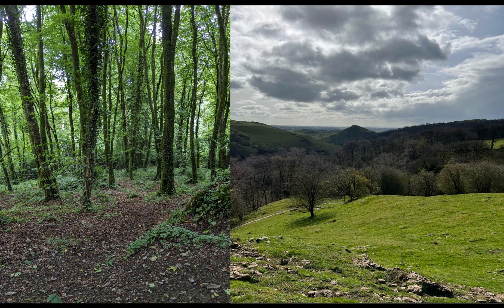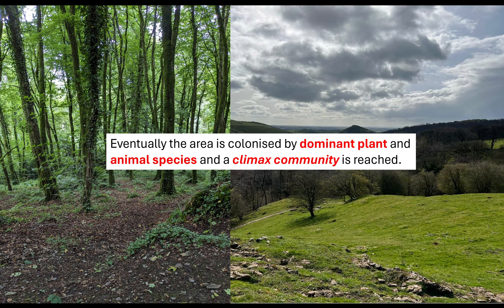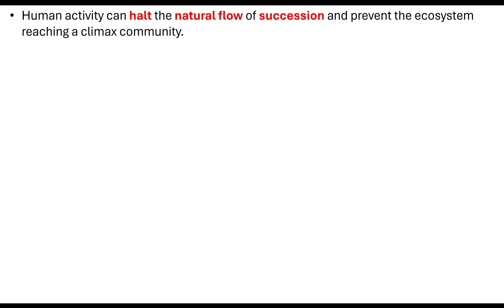This process keeps going, with development of the ecosystem and changes over time. Eventually, the whole area will be colonised by a dominant plant species and dominant animal species. When we reach that point, we say we have reached the climax community. In the UK, that climax community would be the likes of oak woodlands.